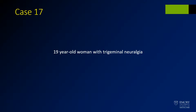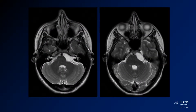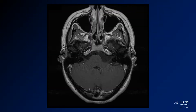K17 is a 19-year-old woman with trigeminal neuralgia. Here we have some T2-weighted images through the pons. This is a T1 post-contrast image. If you see an image and you're wondering if it has contrast, look at the nasal mucosa to see if that's enhancing. If the nasal mucosa is bright on a T1-weighted image, it's because there's been contrast.